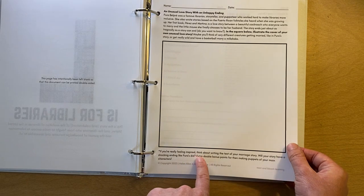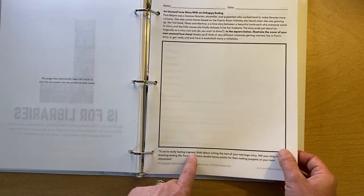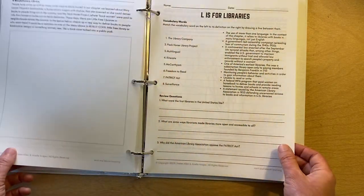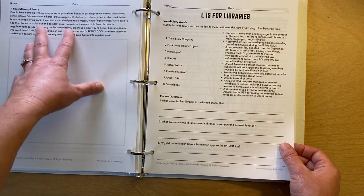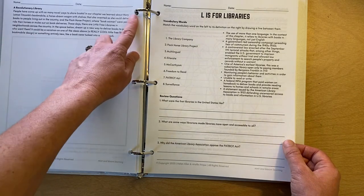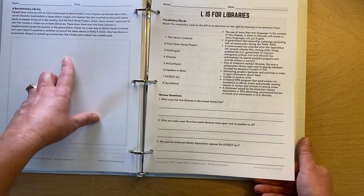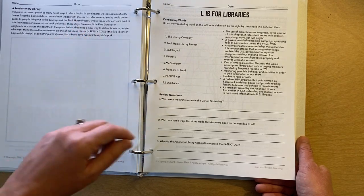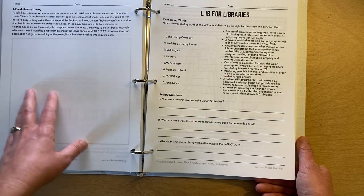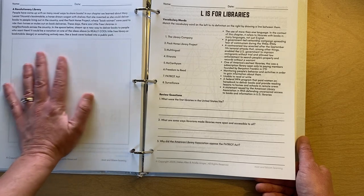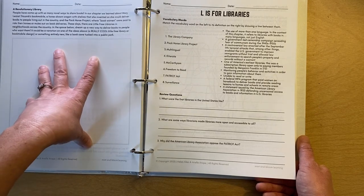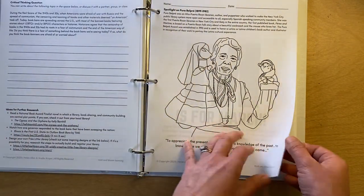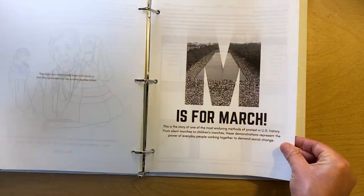We learn about some of the many novel ways. That's a bad pun. I apologize. That people have shared books in America from the Pack Horse Project to bookmobiles and to Little Free Libraries today. So we invite kids to design their own cool way to share books here. Yep. Okay. M is for March. This is a really long chapter. But it's obviously a really important one. It's important marches through American history.